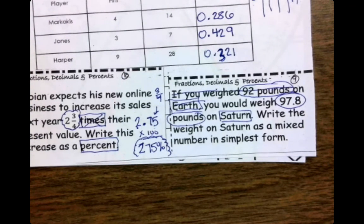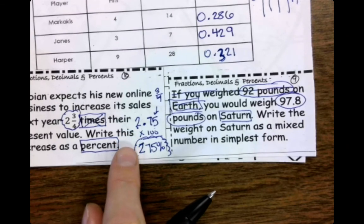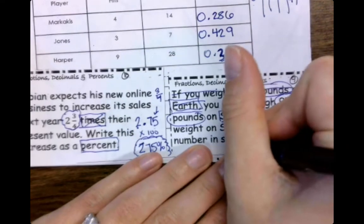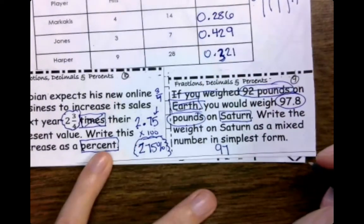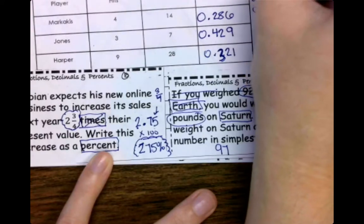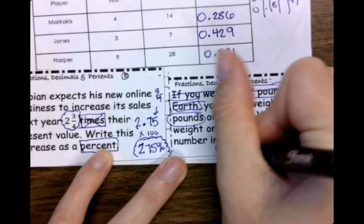So again, just like in this one, right? Let's just worry about the decimal part. Let's keep our 97, and then let's worry about that 0.8. So again, if I put that 0.8, well, that's tenths. So that's eight over ten.